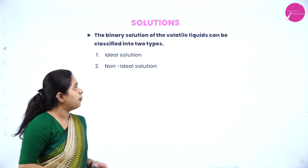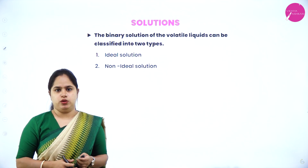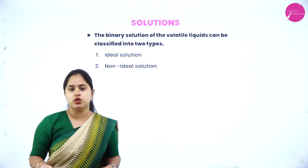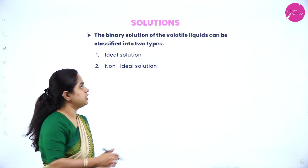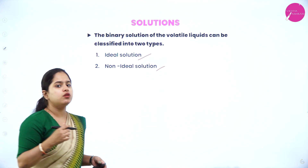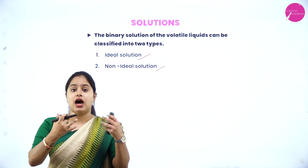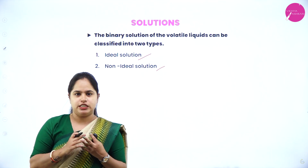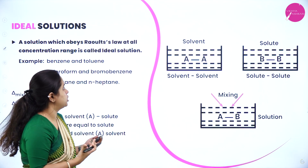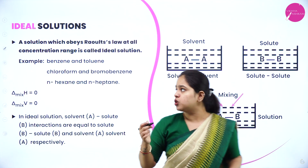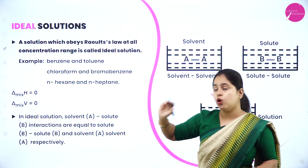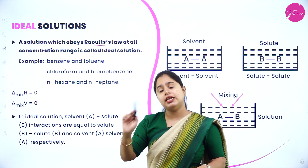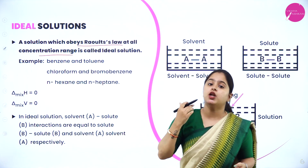Moving on to ideal and non-ideal solutions. Binary solutions of volatile liquids can be classified into two types: ideal solutions and non-ideal solutions. Ideal solutions are solutions which obey Raoult's law at all concentration ranges — at any concentration the solution obeys Raoult's law.